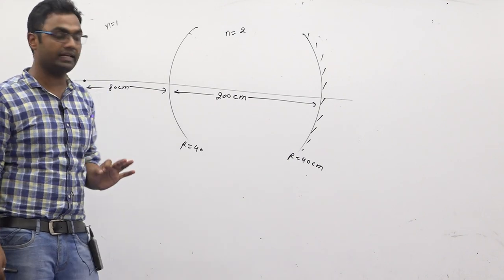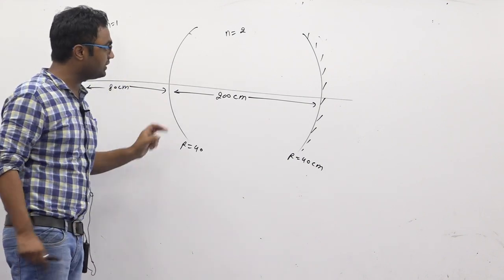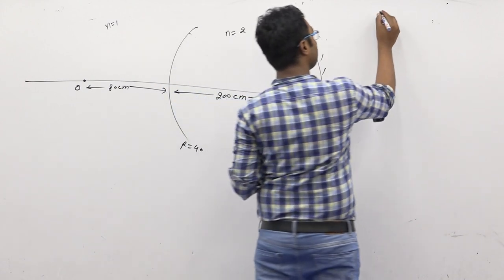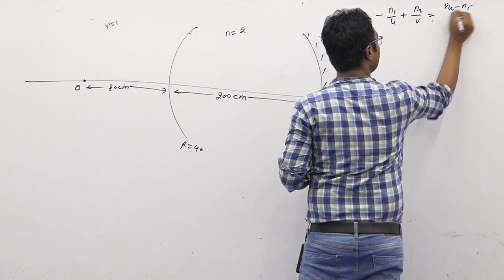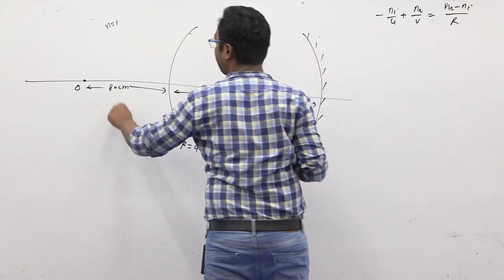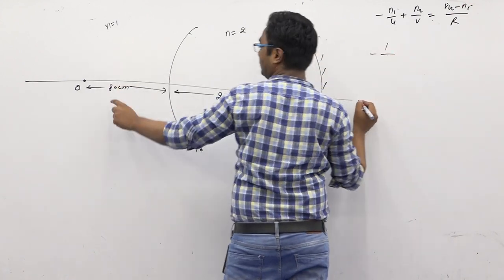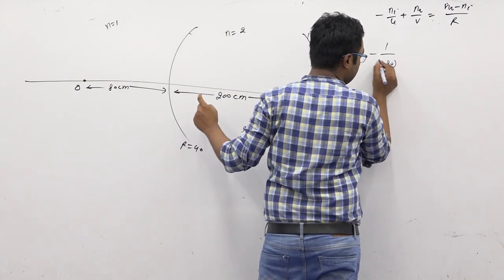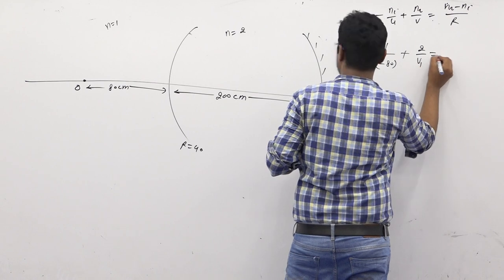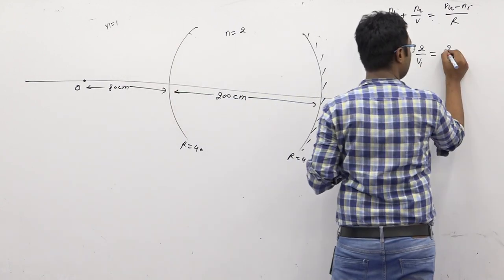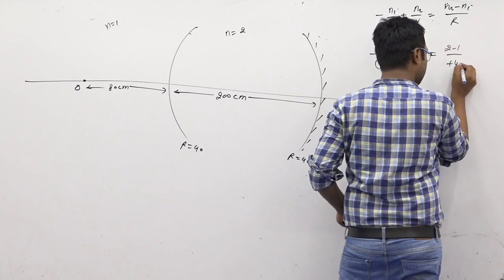Now for solving this question, what are you going to do at this boundary? You will apply minus n_i upon u plus n_r upon v equals n_r minus n_i upon r. So minus n_i upon u, the u value here is 80, plus 2 upon v_1 equals minus 1 upon r. The r value is plus 40.